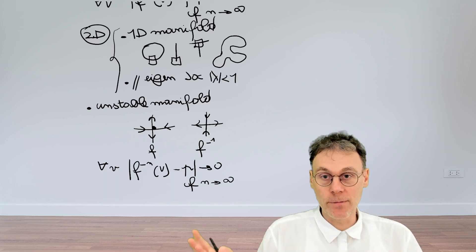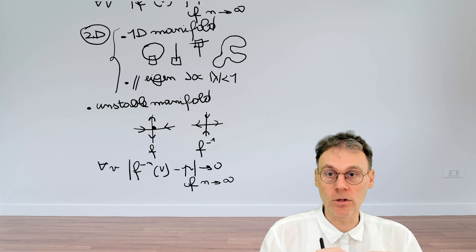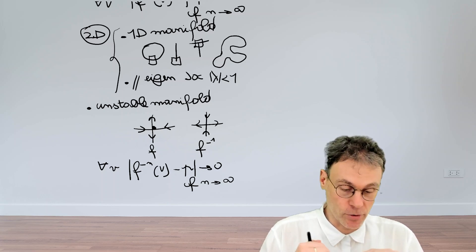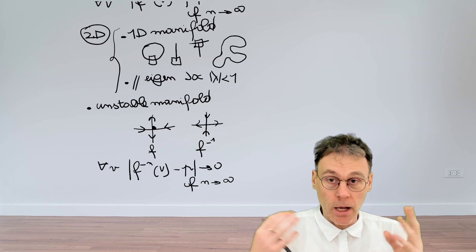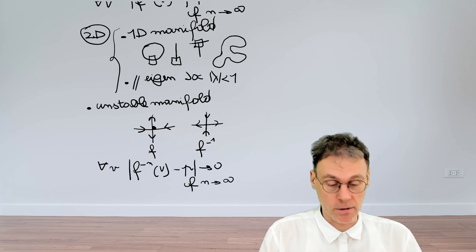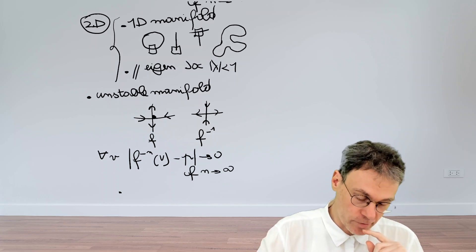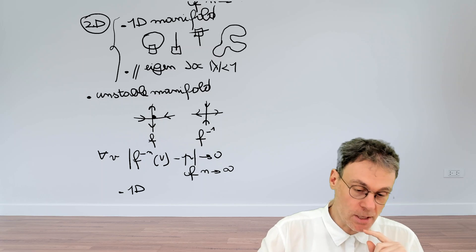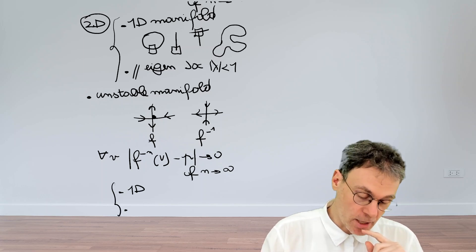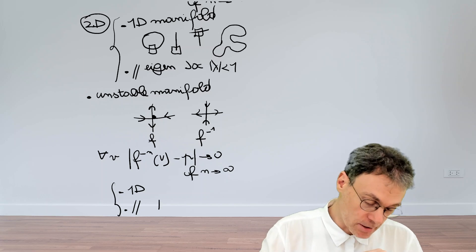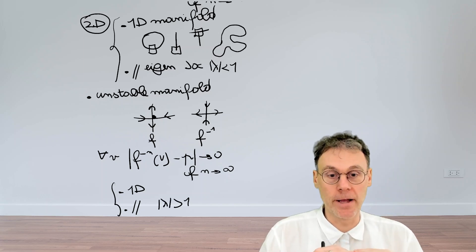So the unstable manifold of a map is actually the stable manifold of the inverse map. So this is how you define it without running into the pitfalls of that first perhaps naive definition that we proposed. Again for the unstable manifold you can come up with a number of properties that we're not going to prove and the properties are very similar. It's again a 1D manifold for the 2D case and this time it will be parallel to the eigenvector of the Jacobian which has an eigenvalue which is a magnitude bigger than one.